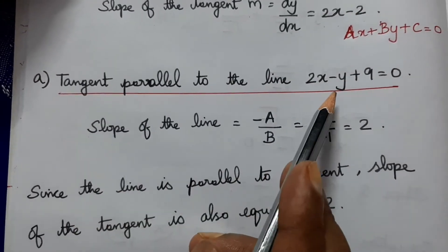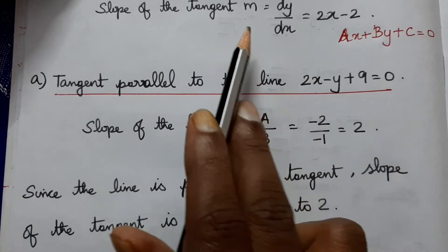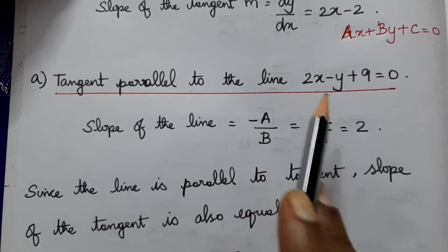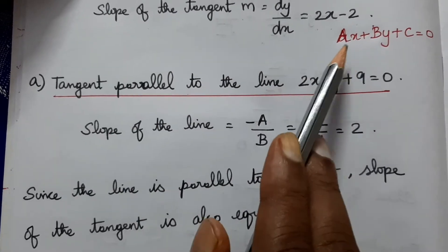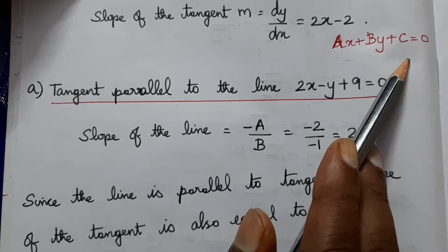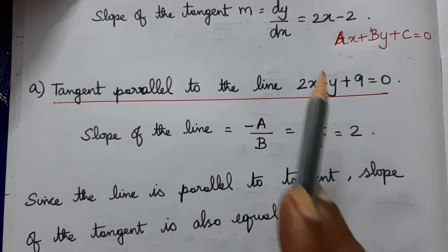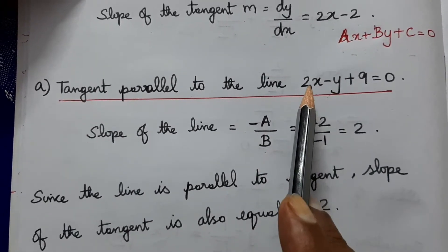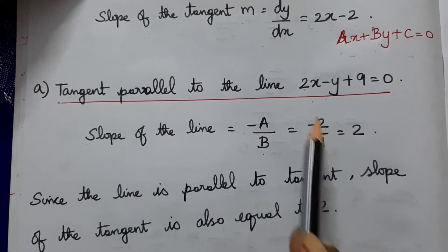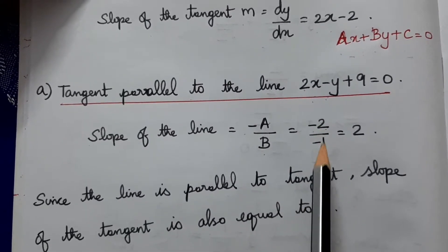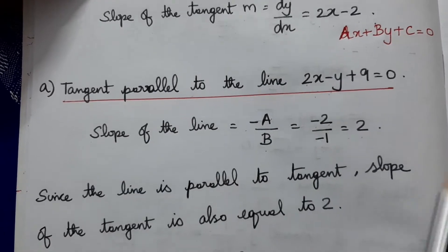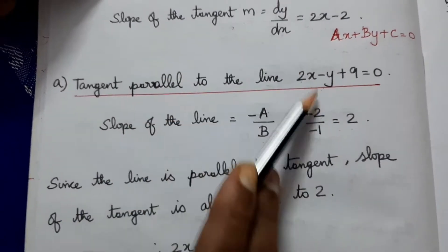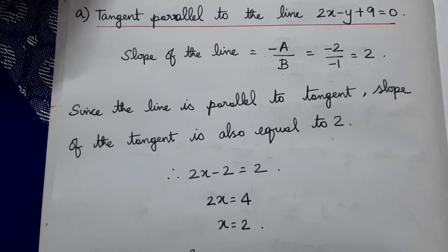Condition 1: Tangent parallel to the line. When two lines are parallel, their slopes are equal. Using the formula for slope of a line ax + by + c = 0, slope = -a/b. For the line 2x - y + 9 = 0, slope = -2/(-1) = 2.